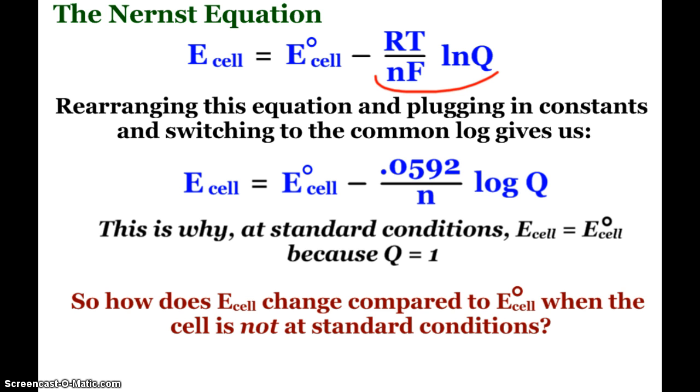And so we end up with that expression, again, log of Q, not natural log of Q. And this is why we see at standard conditions that our E_cell is equal to our E°_cell, because Q is equal to 1 at standard conditions, and log of 1 is 0. So this whole fudge factor goes away, and our E_cell is equal to E°_cell.